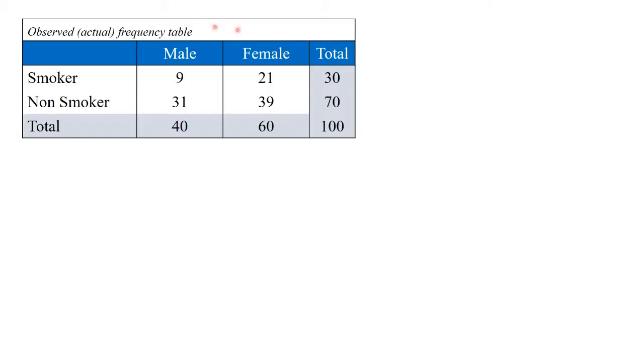This is the actual or observed frequency table. This is the data collected and provided for conducting the chi-squared test of independence. You'll notice two very important features of this table. The first is the number 100 in the bottom right-hand corner. This represents the sample size, n equals 100.